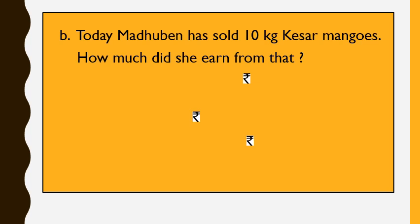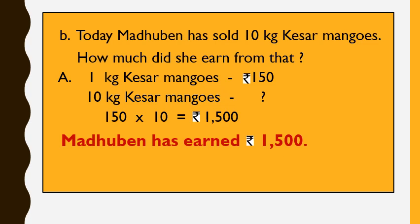Next, Madhubain has sold 10 kg of Kesar mangoes. How much did she earn? It is given that 1 kg of Kesar mangoes costs Rs. 150. So, for 10 kg, we cross multiply and divide: 150 multiplied by 10 is 1,500, divided by 1 is 1,500. So, Madhubain has earned Rs. 1,500 by selling 10 kg of Kesar mangoes.